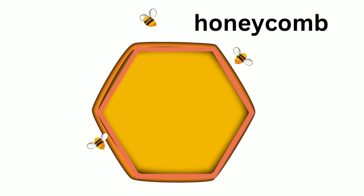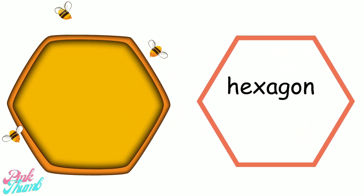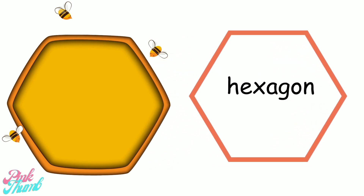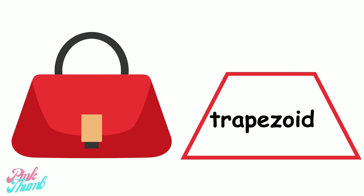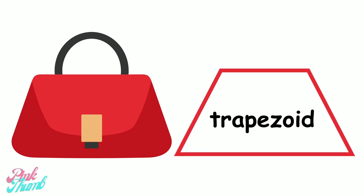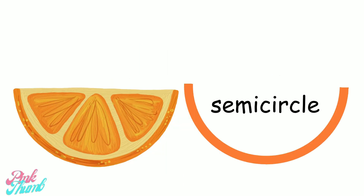What shape is this honeycomb? A hexagon. What shape is this honeycomb? A trapezoid. What shape is this orange slice? A semi-circle.